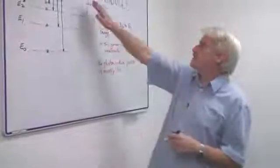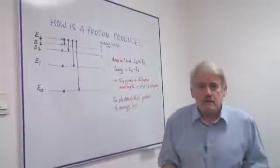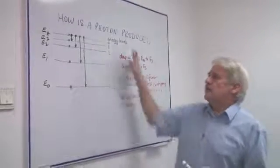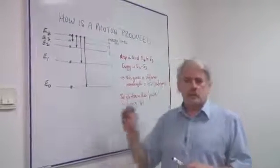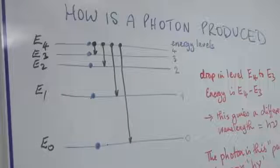Hi, I'm Steve Jones and I'm going to tell you how a photon is produced. Now, in an atom, of course, we have a nucleus, but above the nucleus we have electrons.